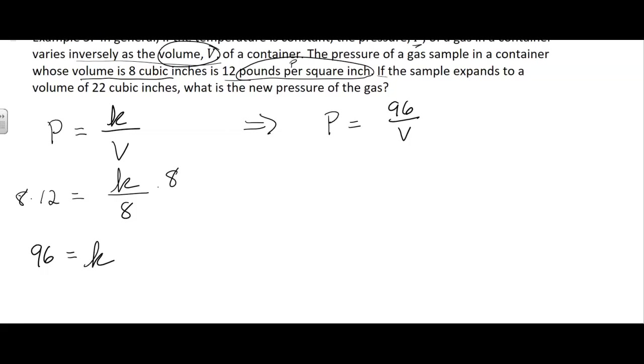Then they're going to ask us a question. If the sample expands to a volume of 22 cubic inches, so they're telling me the volume, what is the new pressure? So I'm trying to figure out P. So I'm going to say 96 divided by 22 because that was the volume. And then I grab a calculator.